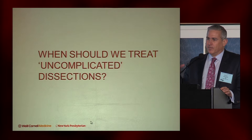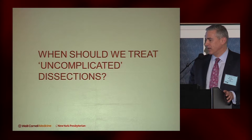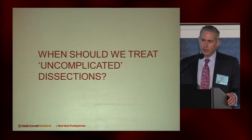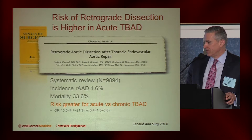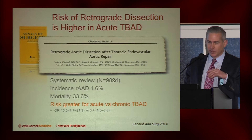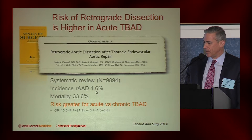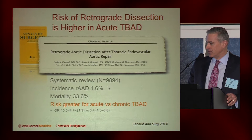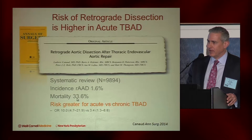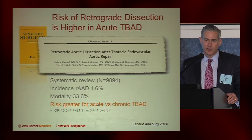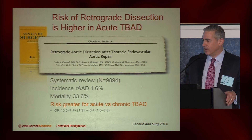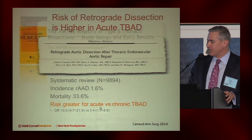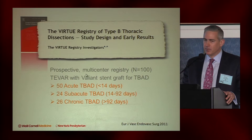Another question is when to treat uncomplicated dissection — right when they come in, or cool them off for a while? The risk of retrograde aortic dissection is higher in the acute phase. A systematic review of almost 10,000 patients published in the literature showed an overall incidence of 1.6%, with high mortality associated. The risk was greater in type B dissections treated acutely versus in the chronic phase. Within the first two weeks, that risk is much higher because of the very fragile and inflamed intimal flap.